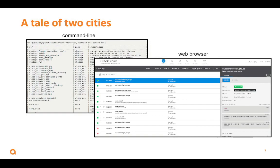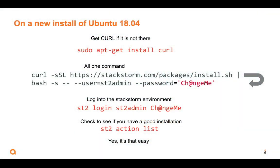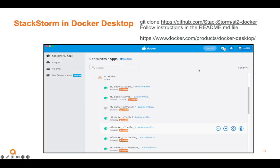When we get StackStorm running, we can access it through a web browser or through the command line. To get it going, get a fresh copy of Ubuntu 18.04, get curl installed with apt-get install curl, then run the big curl command on screen — it gives you an all-in-one development-only installation. You can also use Docker Desktop like I do, running StackStorm in about 18 Docker containers. Clone the repo, follow the instructions, and use the ST2 client container to access the StackStorm CLI.